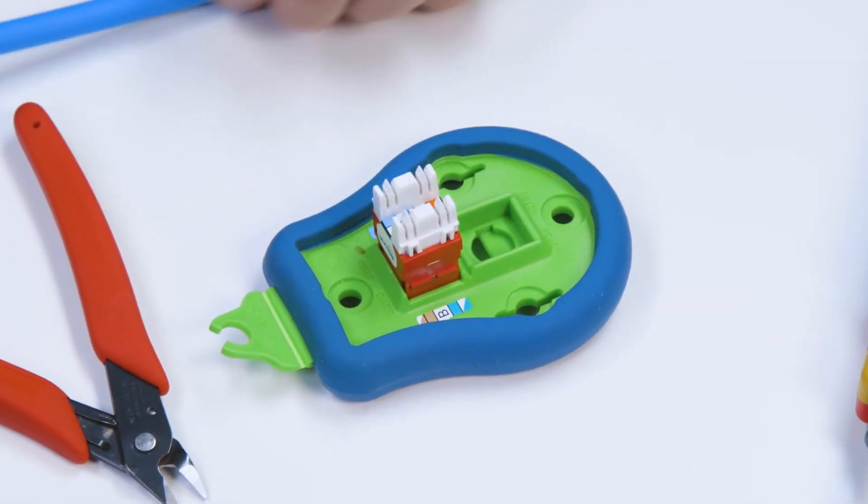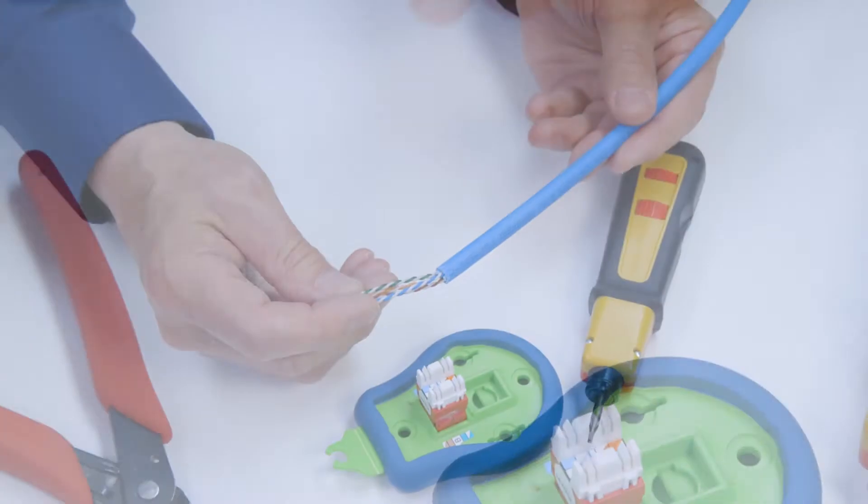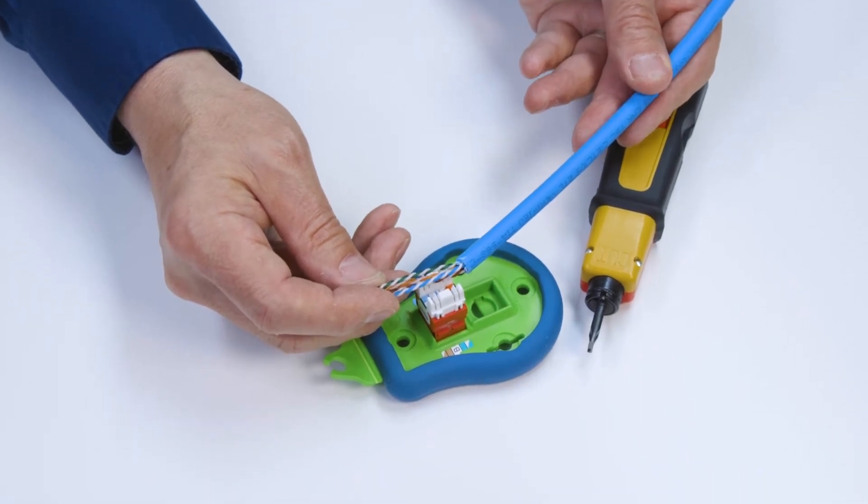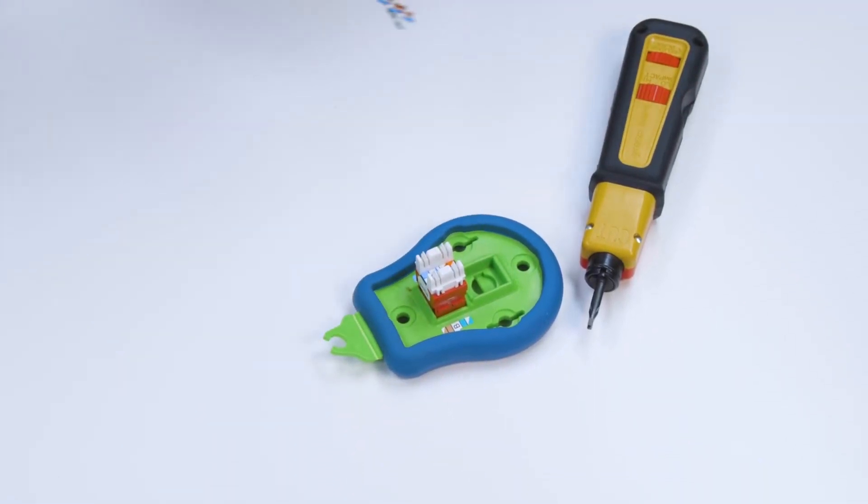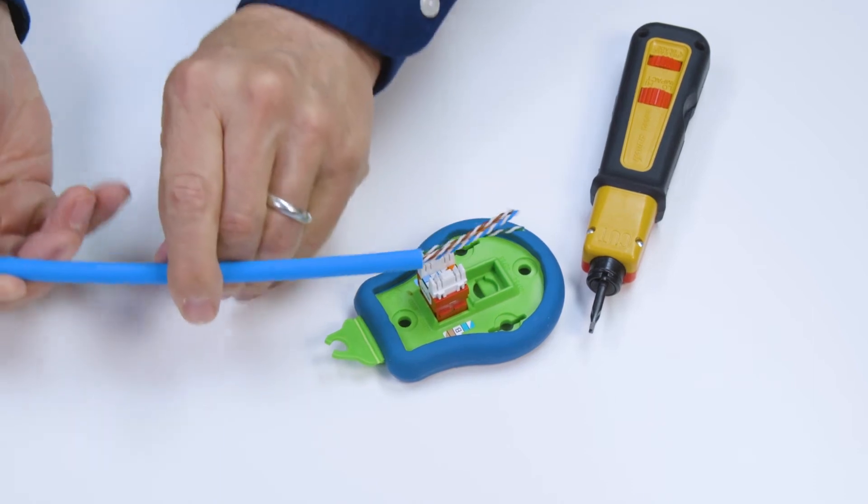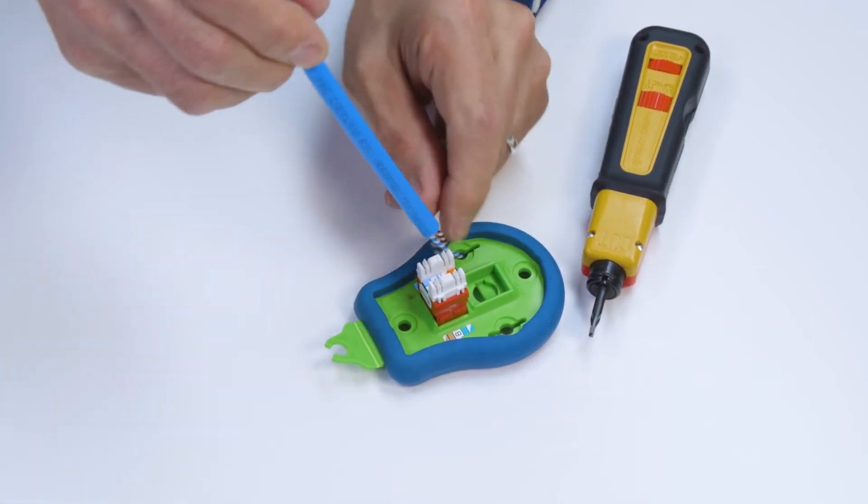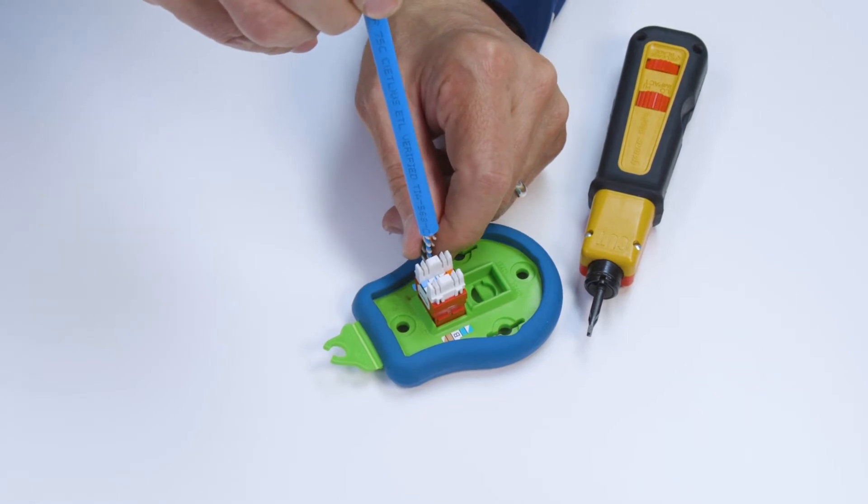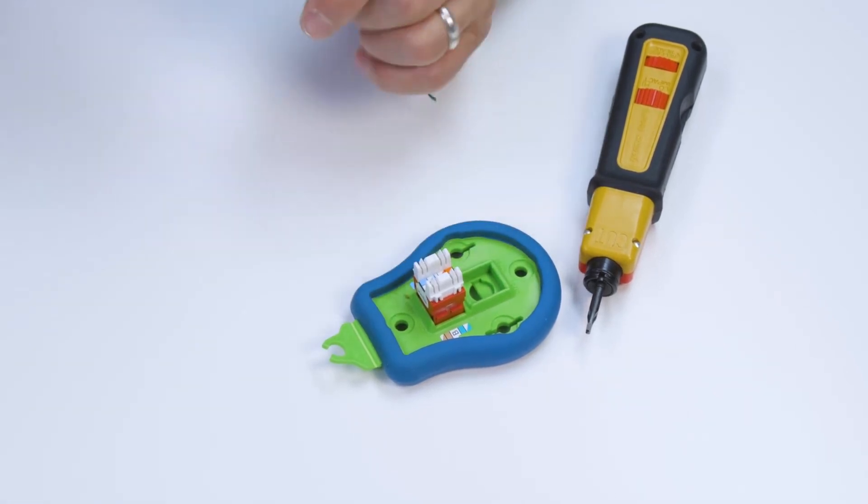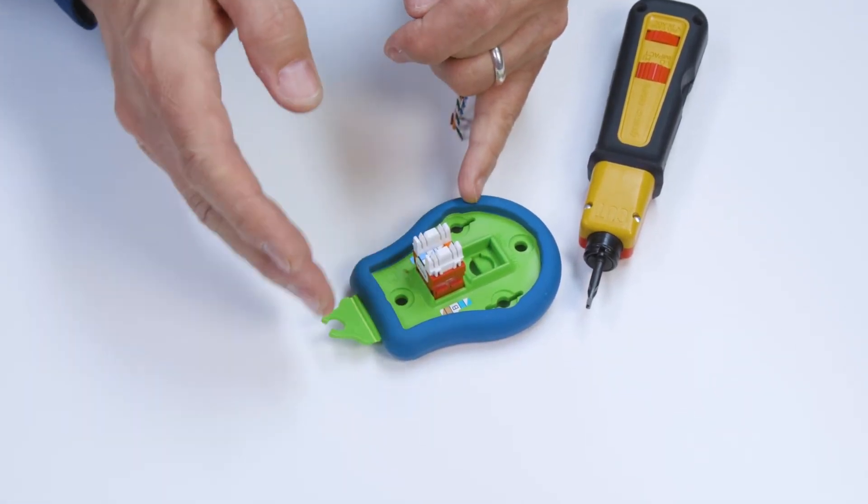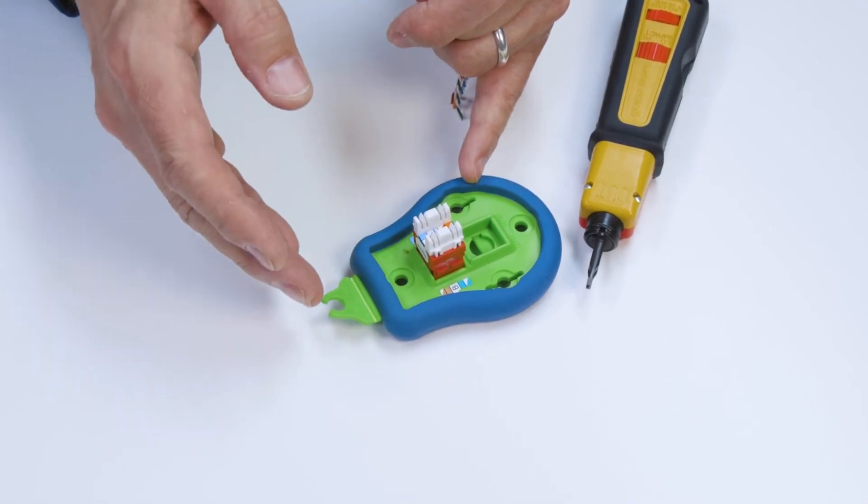Here we'll be using the B wiring method. The cable can be terminated from one of three directions. For this video, we're going to terminate the cable straight down on the jack. This method is ideal when multiple jacks are positioned next to one another in a patch panel or wall plate.